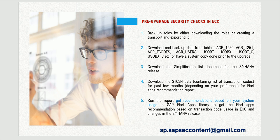Alternatively, download the data from security tables like AGR_1250, AGR_1251, and AGR_T_CODES — the last one will be very useful. Also download AGR_USER so that later on users cannot claim they had certain access that they have now lost. Download USOBT, USOBX, and critically, the customer tables USOBT_C and USOBX_C, because after your system is upgraded to S4HANA, these will help you compare authorizations for transaction codes and authorization objects.